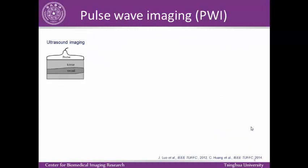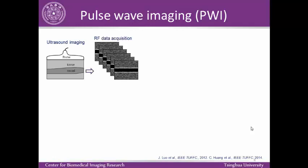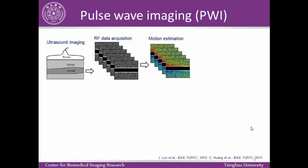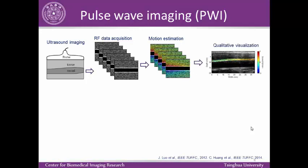This work focuses on using pulse wave imaging to measure regional pulse wave velocity in the carotid arteries. First, ultrasound imaging is performed in longitudinal views of the carotid arteries, and ultrasound radiofrequency data are acquired at high temporal resolutions. A speckle-tracking algorithm is then performed to measure the motion of the arterial wall, and a cine loop can be generated for visualization of pulse wave propagation.